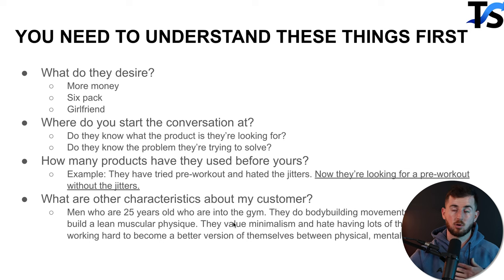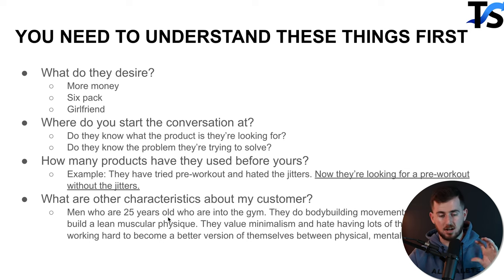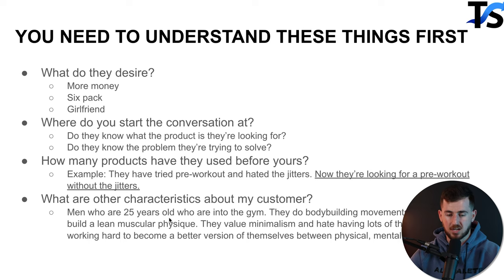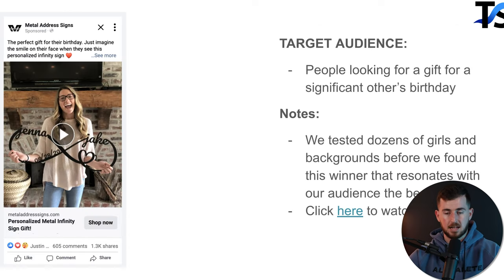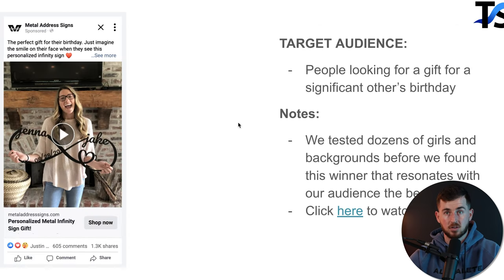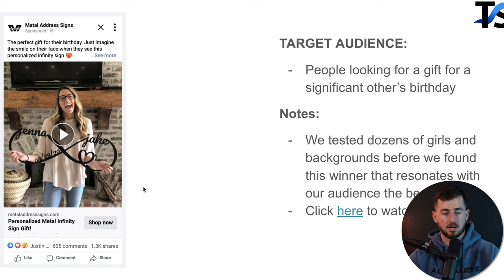And what are the other characteristics of your customer? Don't just say 'people into fitness.' Instead: men who are 25, into bodybuilding movements, looking to build a lean muscular physique, who value minimalism, hate having lots of things, and are working to become a better version of themselves physically, mentally, and financially. That level of specificity should inform your creative. Then let me give you some real examples.